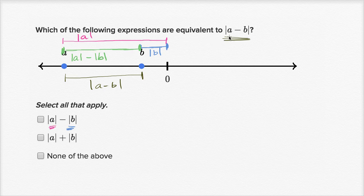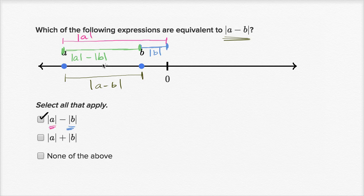That's exactly what we have here. The absolute value of a minus b is the distance between a and b, and that's what this green distance is as well. So this is going to be equivalent to the absolute value of a minus b. If you want to really verify it, you could try it with some numbers. What they tell us about a and b is that both of them are going to be negative — they're both to the left of zero. We also see that b is greater than a, or it's less negative than a.